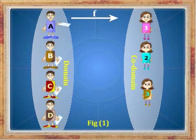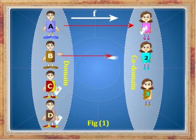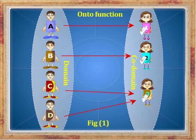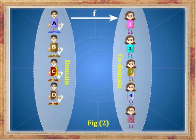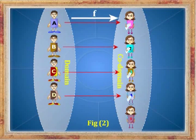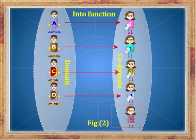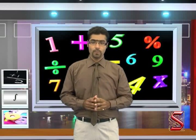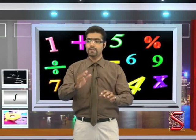In figure 1, all elements of the co-domain have pre-images in the domain, so such functions are known as onto functions. But in figure 2, one element of the co-domain — that is number 5 — does not have any pre-image in the domain. Therefore this type of function is known as an into function. In an into function, there will be at least one element in the co-domain which does not have any pre-image in the domain.